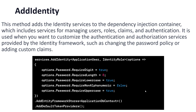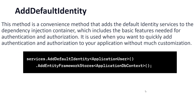After that, you have to add the Entity Framework store using AddEntityFrameworkStores, in which you define the ApplicationDbContext, so it communicates directly with that ApplicationDbContext. And AddDefaultTokenProviders is added for email purposes. That is the AddIdentity method.